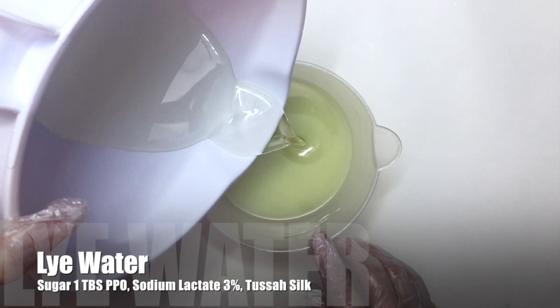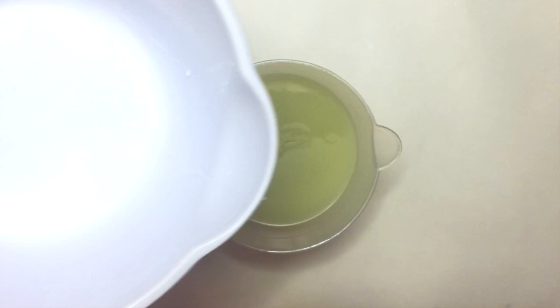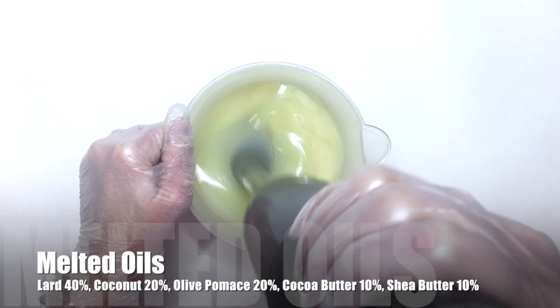I add my lye water which has sugar, sodium lactate, and tussah silk already mixed in. The oils that I use are lard, coconut, olive pomace, cocoa butter, and shea butter.